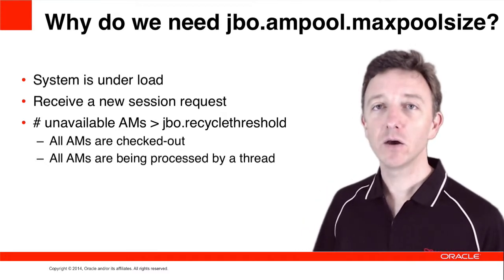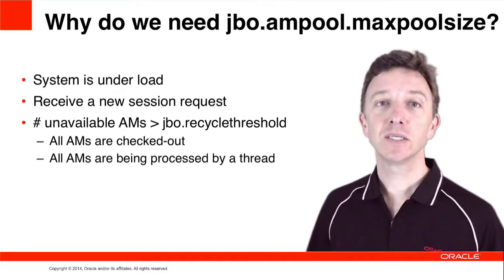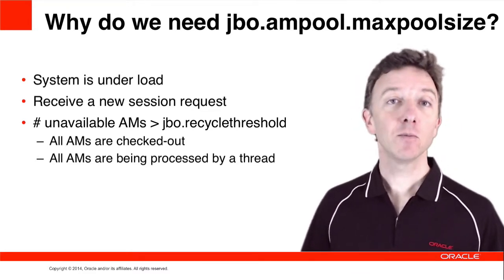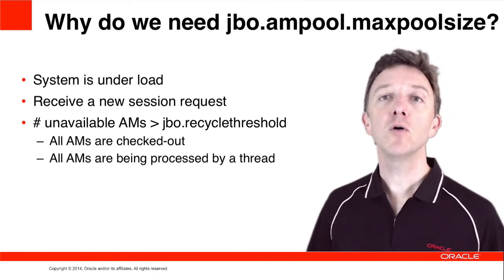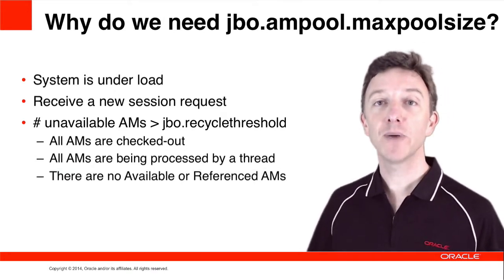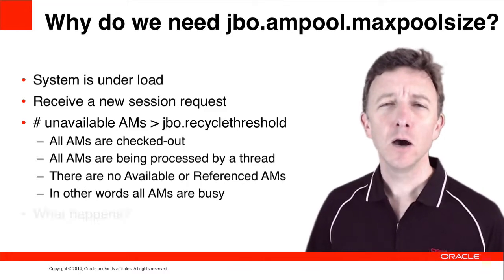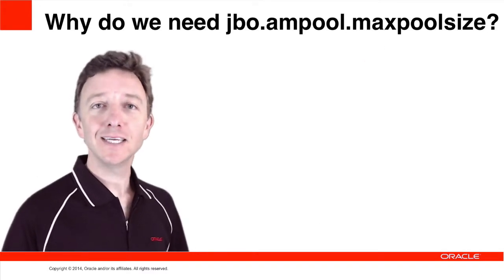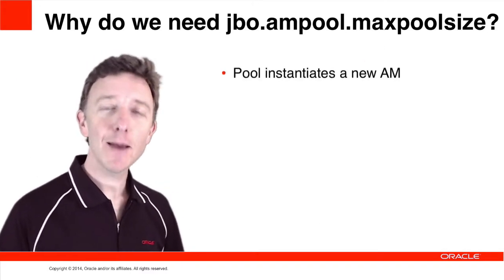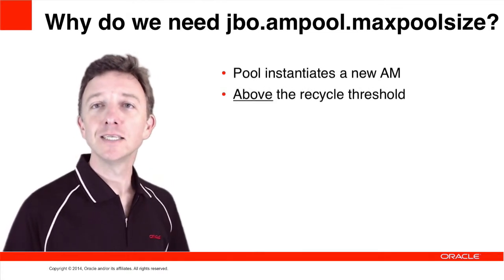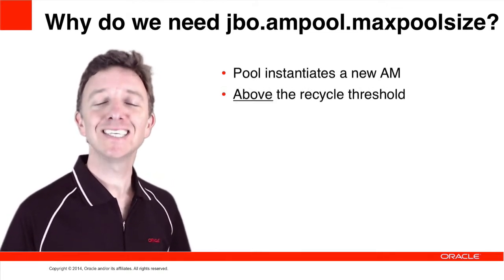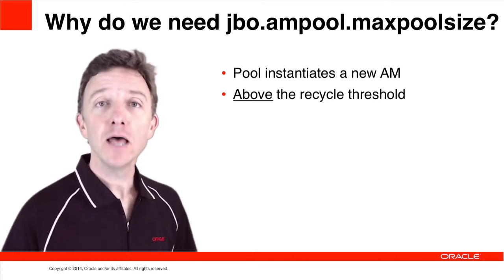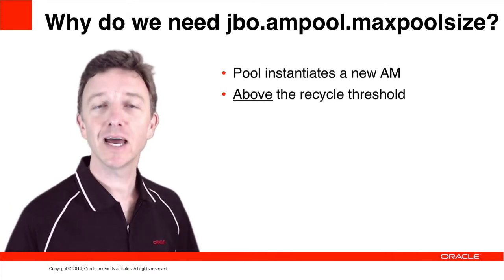So while the system is under heavy load, with lots of requests being received by separate sessions and all the Application Modules under the threshold currently unavailable as they are being processed, essentially there is no available or referenced AMs that can be passivated out to reuse their AMs. What the pool does in this case is instantiate an Application Module above the threshold, such that our total number of Application Modules exceeds the threshold number, to accommodate the additional session requests.